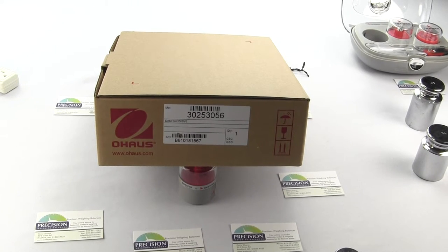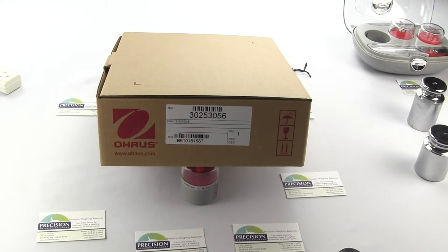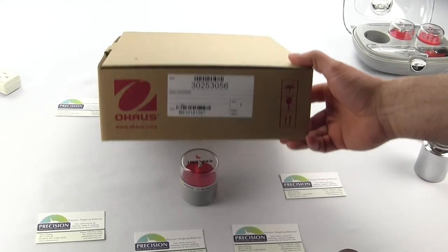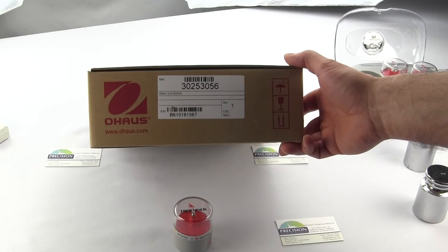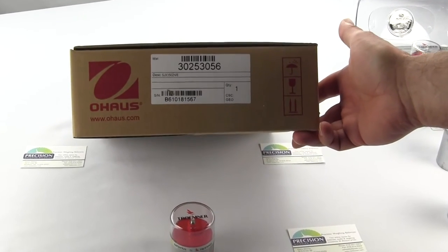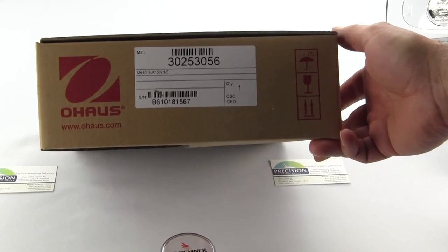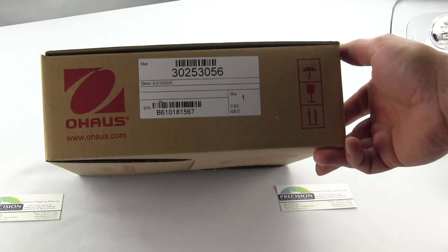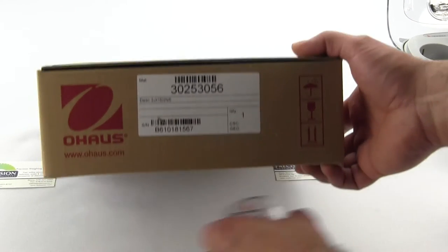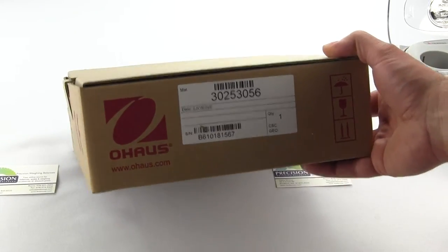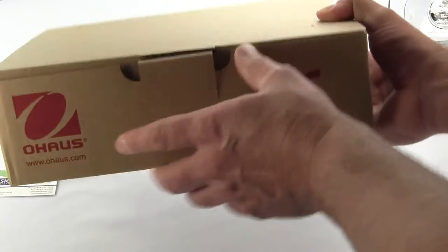Okay, we're Precision Weighing Balances, and in this video we're going to be unboxing the Ohaus SJX 1502NE. This is a new scale that Ohaus has just introduced in 2016. We're going to unbox it and show you what comes with it. You can see it's a simple brown box.